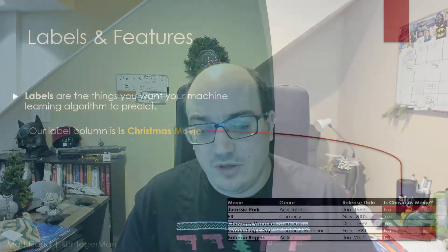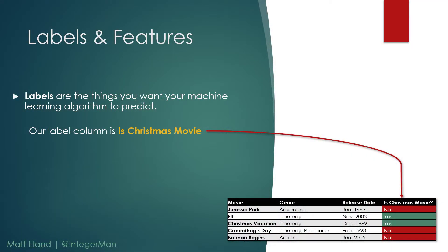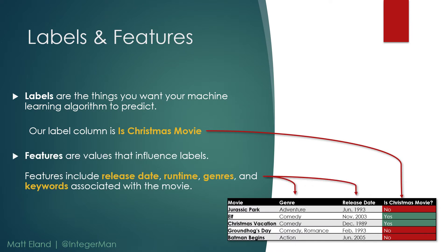A little bit of terminology before we go any further. In machine learning, we have this idea of labels and features in classification. A label is the thing that we are trying to predict — in our case, whether or not a movie is a Christmas movie. A feature is basically any other column that potentially contributes to that label: the genre, the release date, the runtime, things like that. Those are all features in this data set. Given a set of features, we want a machine learning model to be able to predict its label.